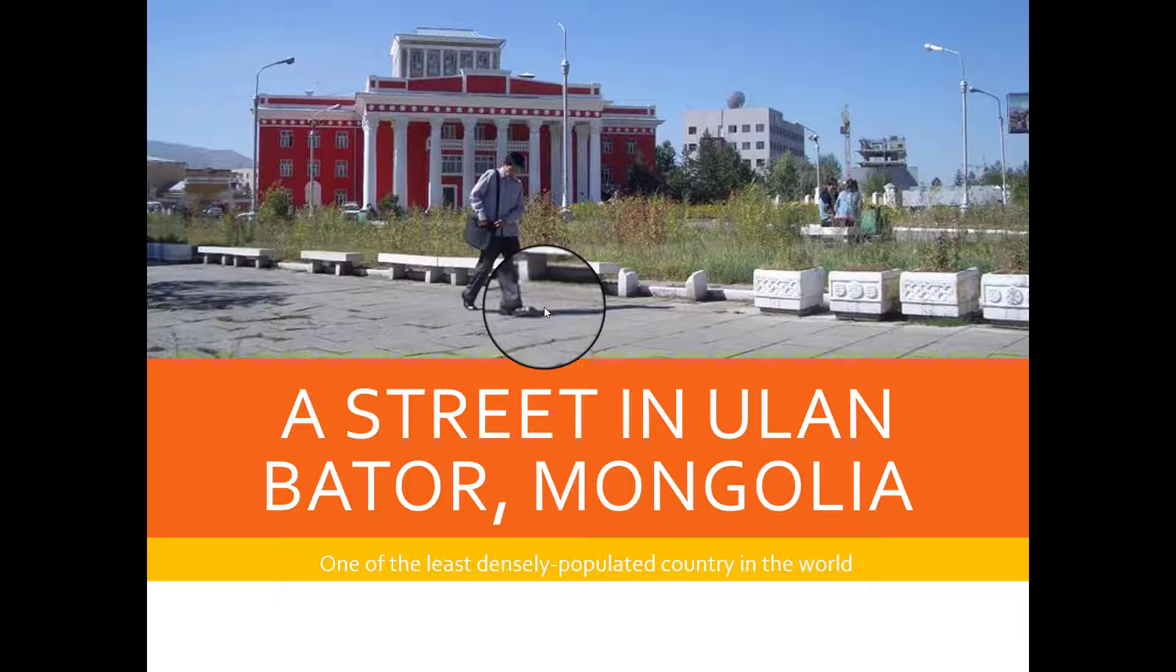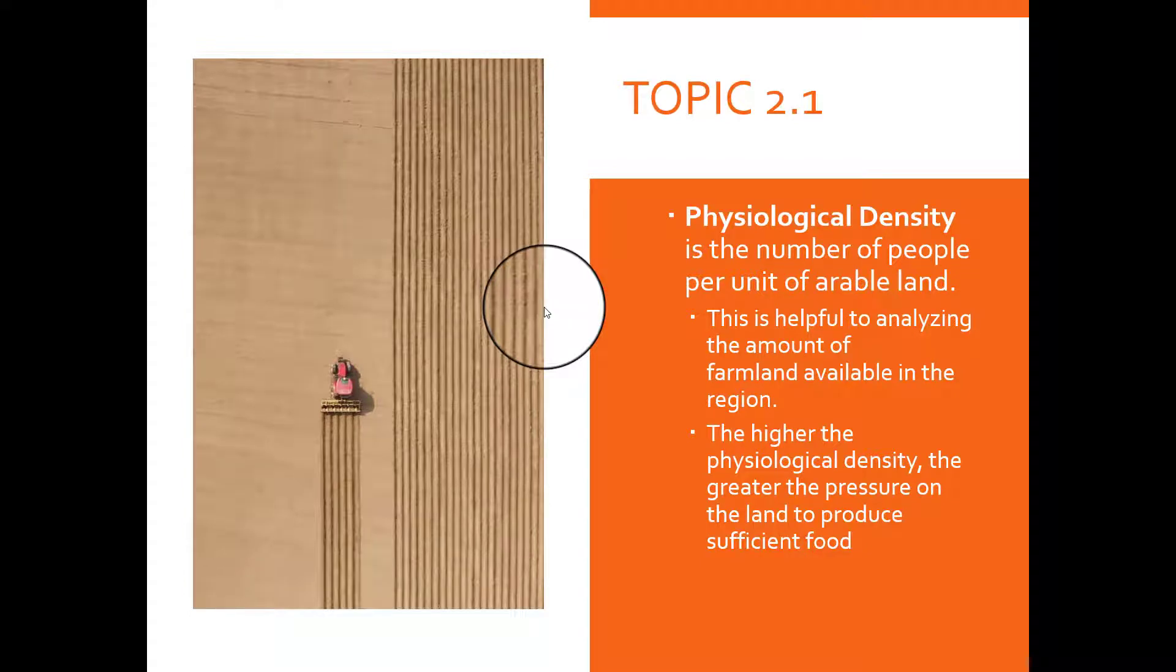Physiological density is the number of people per unit of arable land. Arable here means farmable, or you're able to grow crops or you have agricultural output. It's basically helpful for geographers to be able to analyze the amount of farmland or land that can grow crops available in that particular region. The higher the physiological density, the more pressure it is on that particular region to supply sufficient food for the society.